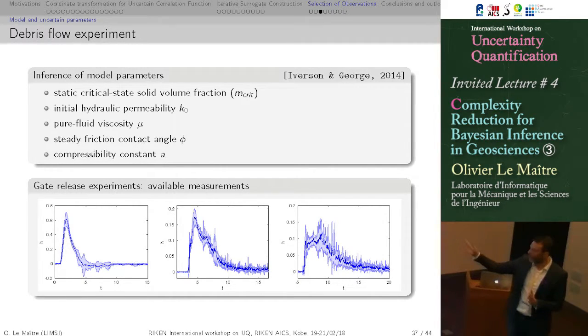Just to show that it's quite complicated, but it involves some parameters that are actually quantities that cannot be measured directly, but must be inferred from some experiments. And based on existing work by Iverson and George, we reduce the set of uncertain parameters to just five of them. So the static-critical-state-solid-volume fraction, the initial hydraulic permeability K0. So it's really the flow of a mixture of gravel, muds, of everything. So it's kind of porous media. So you have hydraulic permeability initially. You have pure fluid viscosity mu, that is the viscosity of the fluid around the debris. Steady friction contact angle phi, that prescribes when the debris start to flow depending on the slope on which they are lying. And you have a compressibility constant A, that fixes the behavior of the mixture, how it reacts to compression.